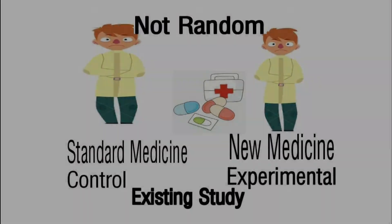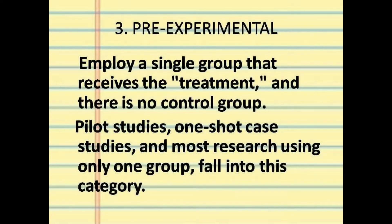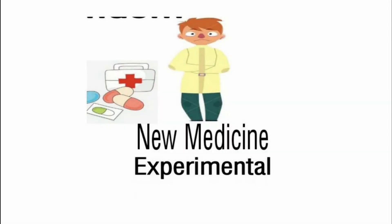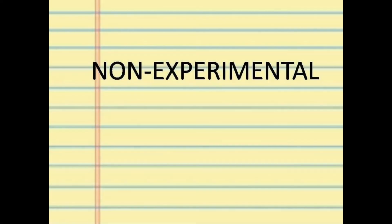Next we have pre-experimental. It employs a single group that receives the treatment and there is no control group. Pilot studies, one-shot case studies, and most research using only one group fall into this category. As we can see in our sample, there is no control group — only the experimental group is given the new medicine, and then we observe and study the result.